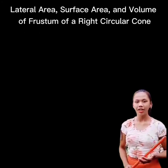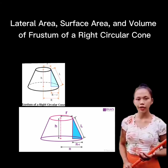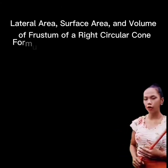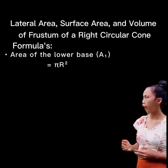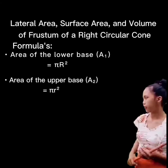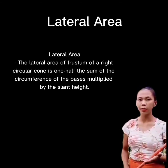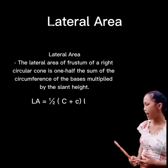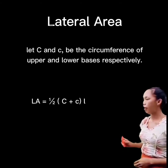Today's topic covers the lateral area, total surface area, and volume of the frustum of a right circular cone. The area of the lower base is A₁ = πr², and the area of the upper base is A₂ = πr². The lateral area of the frustum equals one-half the sum of the circumferences of the bases multiplied by the slant height: Aₗ = (1/2)(C₁ + C₂) × l.